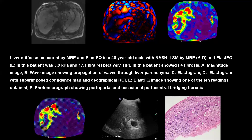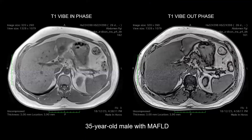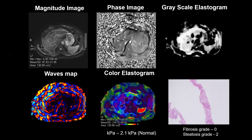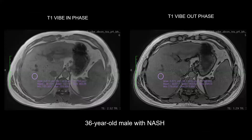F4 fibrosis shows shades of red on the color elastogram maps — the highest grade of fibrosis we detected. For a MAFL patient, a 35-year-old male, in-phase and out-of-phase images show a signal drop indicating fat. When we ran the MRE sequence, the magnitude image, phase image, grayscale elastogram, wave maps, and color elastogram all showed only shades of violet or blue — indicating no fibrosis. In all these patients, we are also performing biopsies as part of ongoing studies and projects.